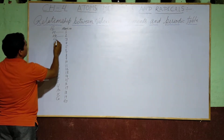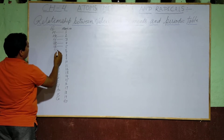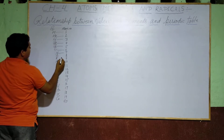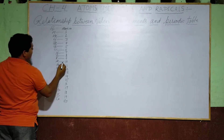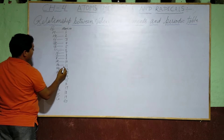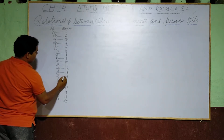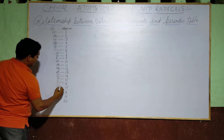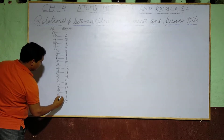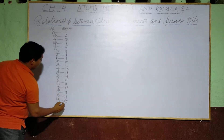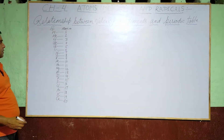Hydrogen 1, Helium 2, Lithium 3, Beryllium 4, Boron 5, Carbon 6, Nitrogen 7, Oxygen 8, Fluorine 9, Neon 10, Sodium 11, Magnesium 12, Aluminium 13, Silicon 14, Phosphorus 15, Sulphur 16, Chlorine 17, Argon 18, Potassium 19, and Calcium 20. Now I am going to give you the mass number.